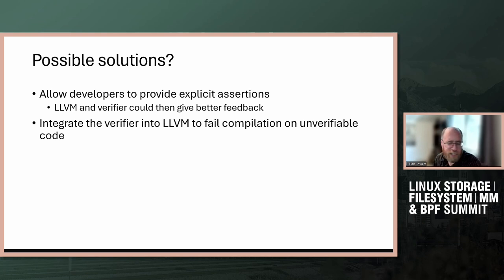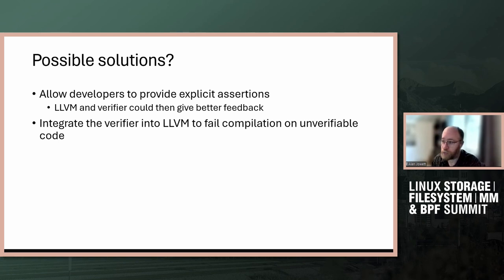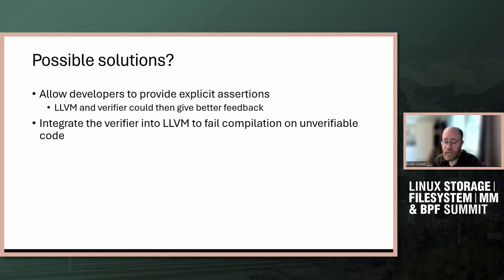This is implicitly done through the code today and through the behavior of the code, but it's often a challenge for developers to understand, for a particular failure, what was it that the verifier didn't like about their code. One other approach that might be possible is to move the verification — not the authority of verification, but more of a test verification — into the LLVM compilation stage.